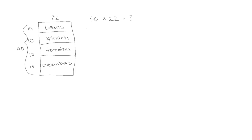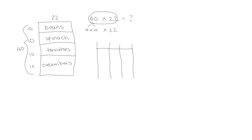So we can write our problem as 40 rows times 22 plants equals how many total plants. We're going to rewrite 40 as 4 times 10, times 22. We see this is similar to the area model we've used before to find the area of a rectangle. So let's look at this in a place value chart. Now we've used a place value chart before to multiply, but doing 40 dots 22 times would be quite a long task and we'd probably make a mistake. So let's use what we know about the associative property and the place value chart to make this a little easier.